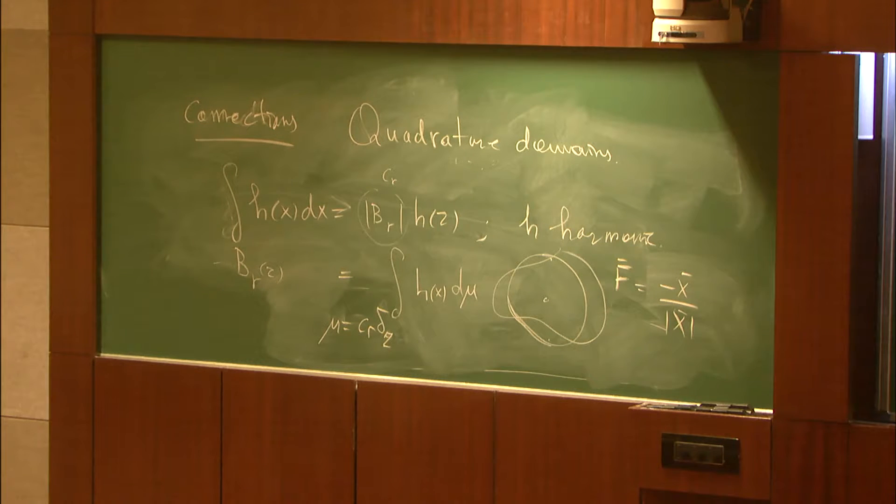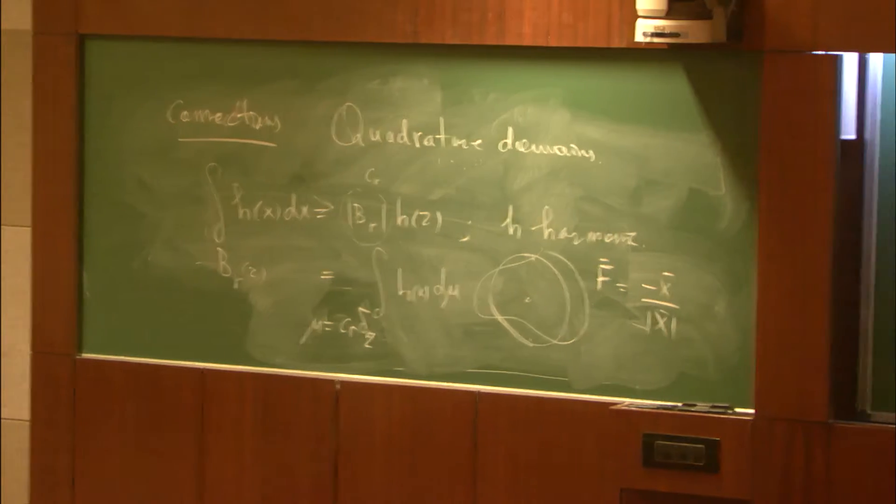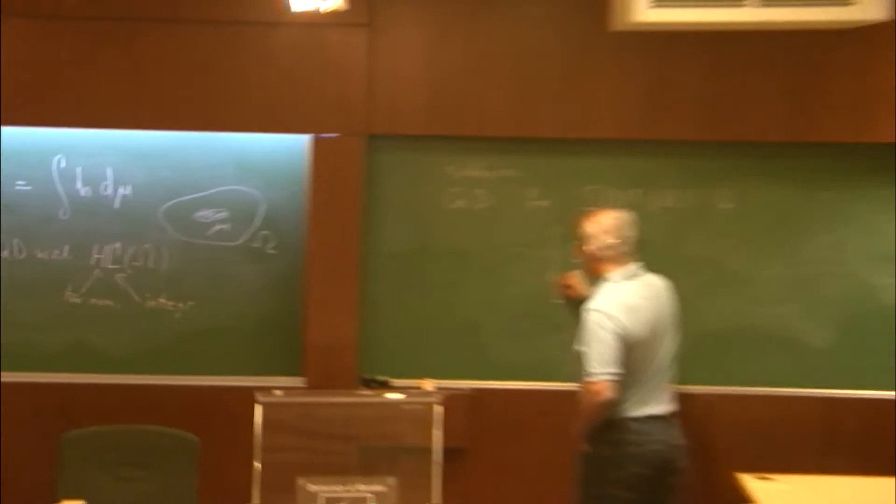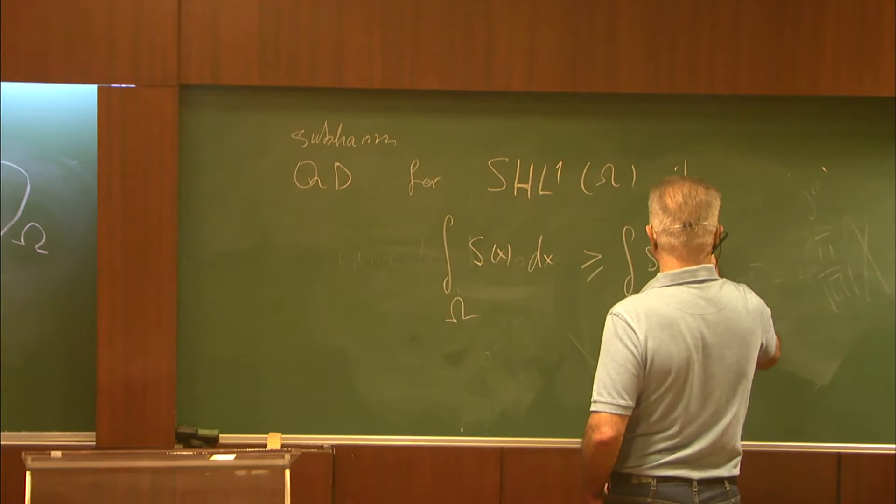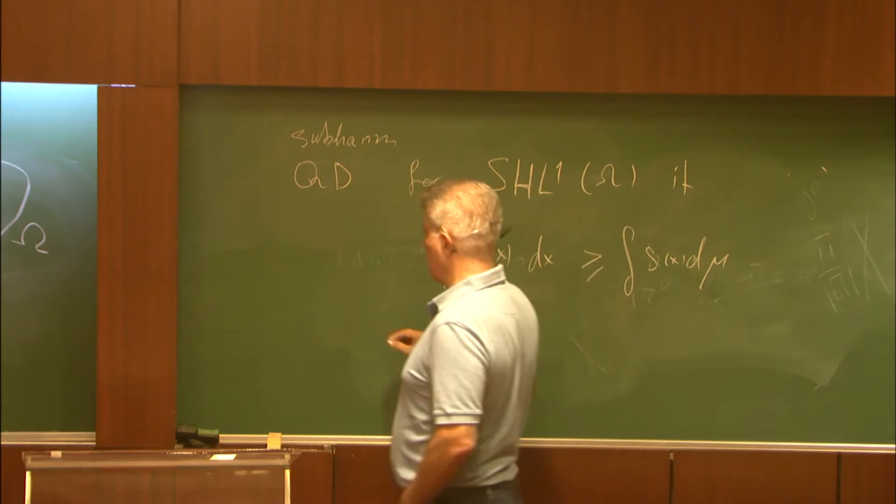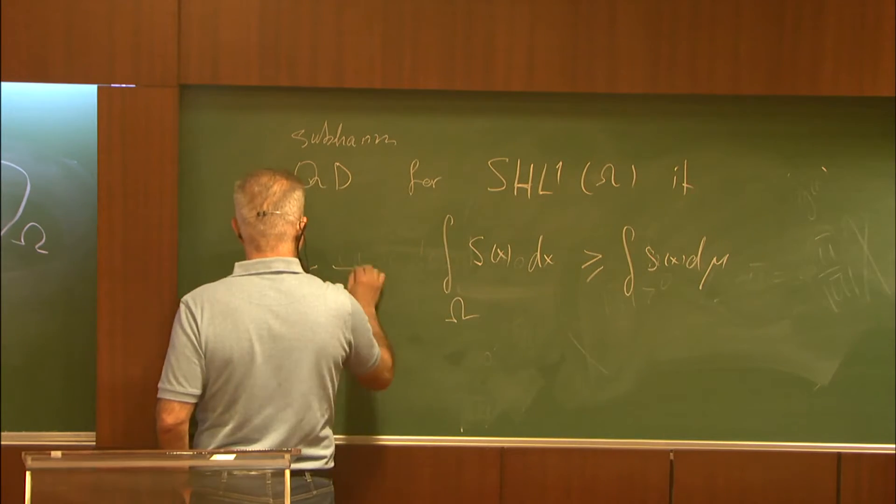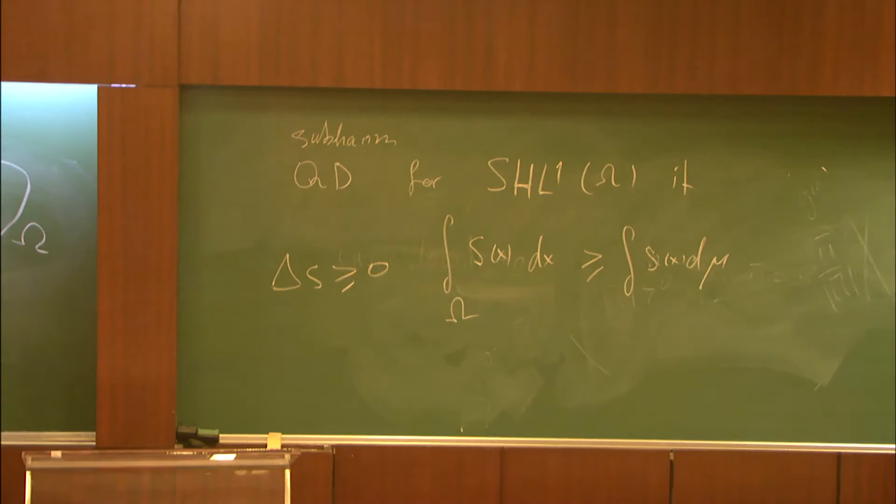If I have subharmonicity, I can do the same here and I would call this subharmonic quadrature domains. If you get the integral of subharmonic functions dx over omega is larger than or equal to the integral with respect to the measure. Then you know that this is going to be equality, and a similar version we can actually define like that for subharmonic quadrature domains.